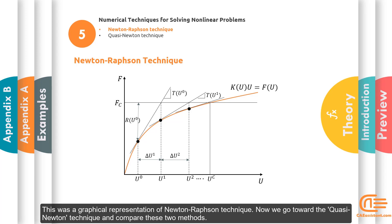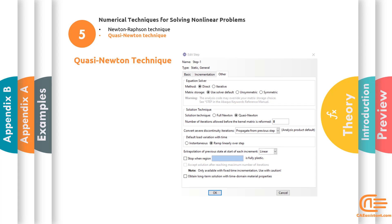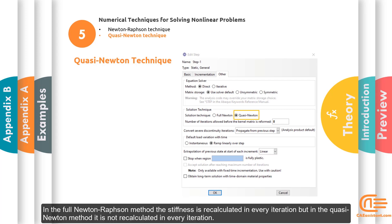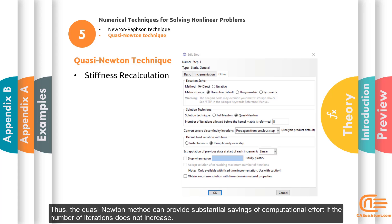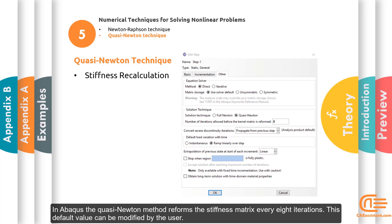Now we go toward the quasi-Newton technique and compare these two methods. The quasi-Newton method differs from the full Newton-Raphson method in how frequently the stiffness matrix is recalculated. In the full Newton-Raphson method, the stiffness is recalculated in every iteration, but in the quasi-Newton method it is not recalculated in every iteration. Thus, the quasi-Newton method can provide substantial savings of computational effort if the number of iterations does not increase. In Abaqus, the quasi-Newton method reforms the stiffness matrix every eight iterations, and this default value can be modified by the user.